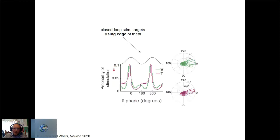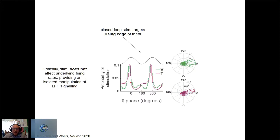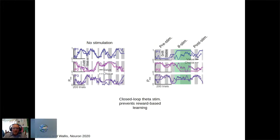Critically, because stimulation pulses are on the order of 100 microseconds, there is no impact on underlying firing rates in a 100-millisecond window on either side of the pulse. We delivered stimulation in a block-wise fashion — baseline pre-stim learning, then stimulation on. During stimulation, the animal fails to update values: he chooses the most valuable option far less than he should, blocking reward-based learning.